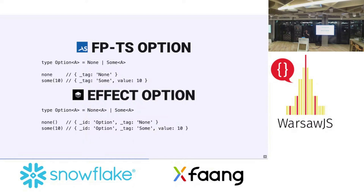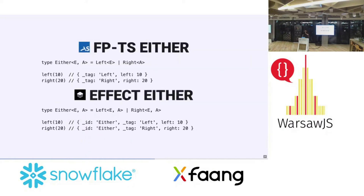I won't go into details here due to time, but it basically means we cannot just switch from FP-TS to Effect — we cannot use them interchangeably in one codebase. This has consequences for migration: we would pretty much have to migrate to Effect all at once, rather than progressively switching parts of a large project.